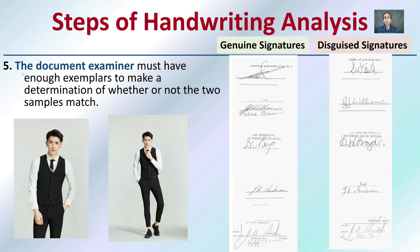So here we have steps of handwriting analysis. The document examiner's job is to do this. They must have enough exemplars to make determination of whether or not two samples match. So we have genuine signatures and disguised signatures. Give the example here of the picture of the same person. One's zoomed in, one's further out. Being able to find some of these similarities in handwriting and analysis will determine similar features. Just as if you look at this image quickly, you could probably say, oh, of course that's the same person. Handwriting analysis person who's skilled can do the same thing.